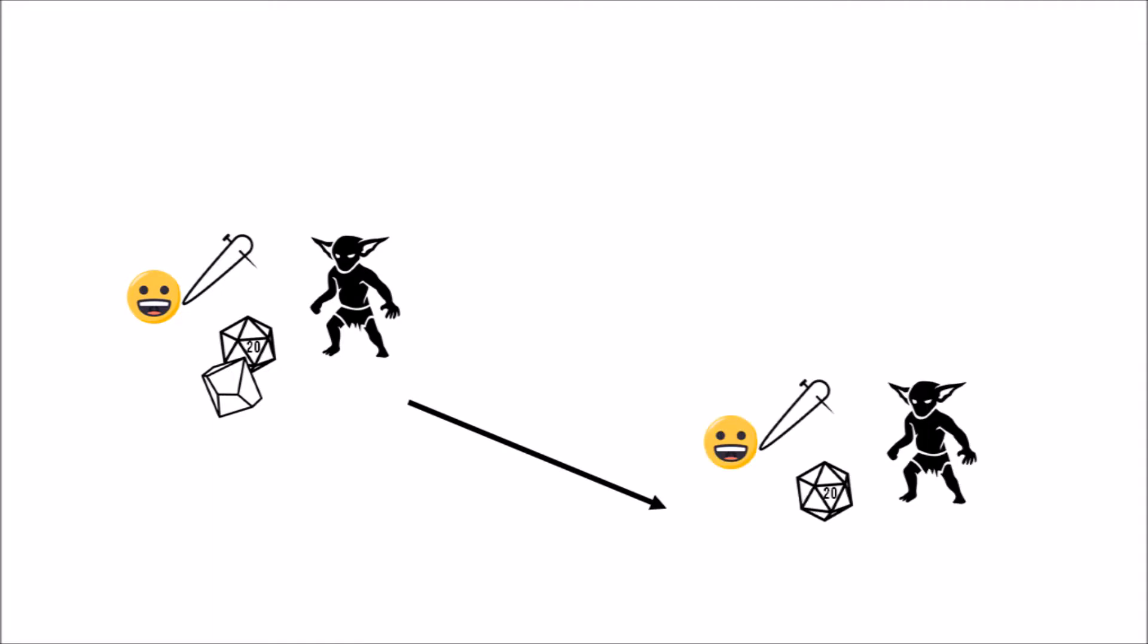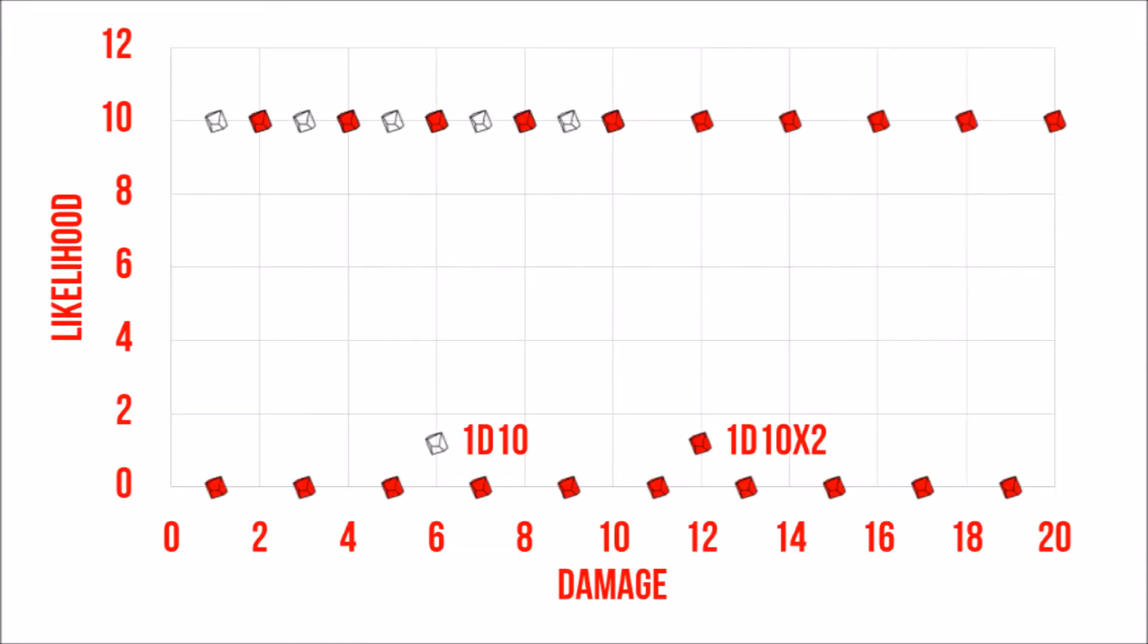Suppose for example you're playing Pathfinder with a great club and you score a critical hit. Normally this weapon rolls a 1d10 for damage. Multiplying the damage times two sounds pretty good. The range on your histogram goes from 1 to 10 to 2 to 20, but maintains its flat shape. It's definitely producing higher damage, but not as consistently as you might like.